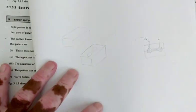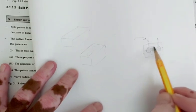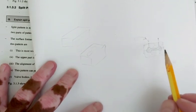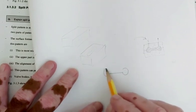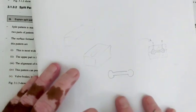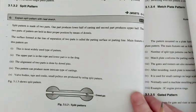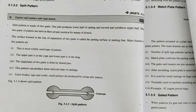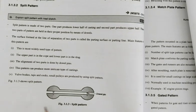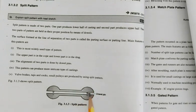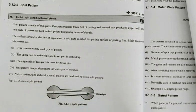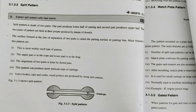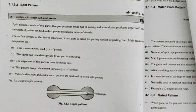After solidification, if you remove these boxes, the bottom box called drag and the top box called cope, you will get a solid piece of dumbbell like this. Split pattern is made up of two parts. One part produces the lower half for casting, and the second part produces the upper half casting. These two parts of pattern are held in their proper position by means of dowel pins. The surface formed at the line of separation of two parts is called the parting surface or parting line.